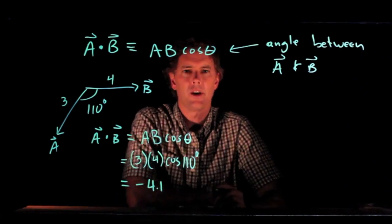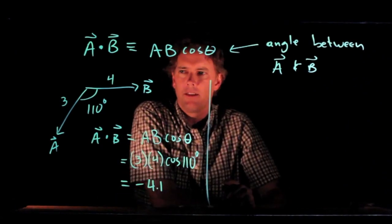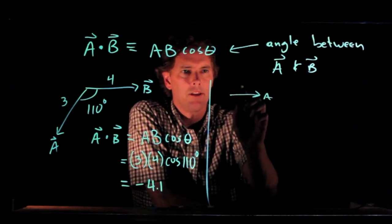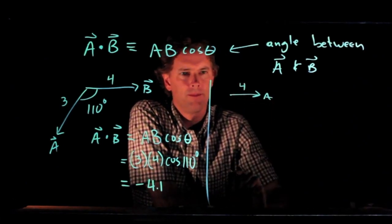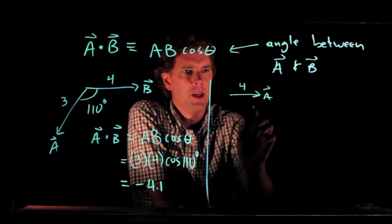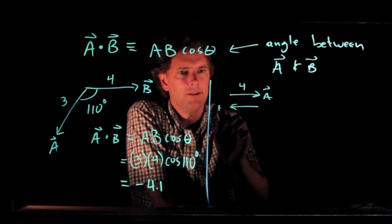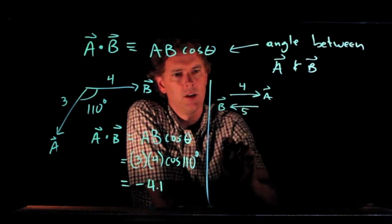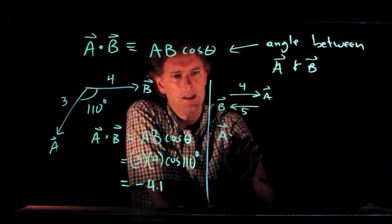All right, let's try another one. Let's say that A is pointing to the right and has magnitude 4, and vector B is pointing to the left and has magnitude 5. What is A dot B?